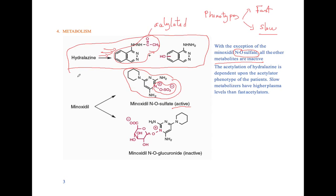The bottom line is: fast acetylators are going to metabolize hydralazine quicker, slow acetylators are going to metabolize it slower, and so there will be a higher concentration of hydralazine in the system. The only active metabolite of either one of these drugs is the NO sulfate of minoxidil. I hope this helps — this is the end of the vasodilators lecture.